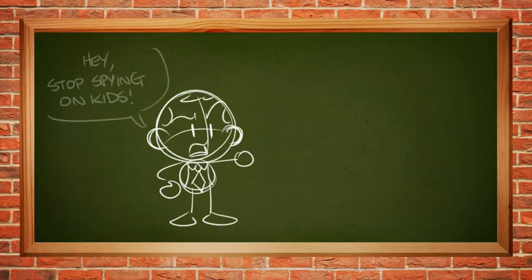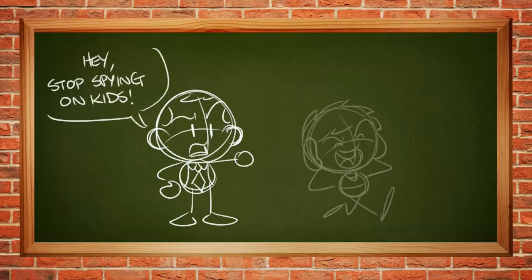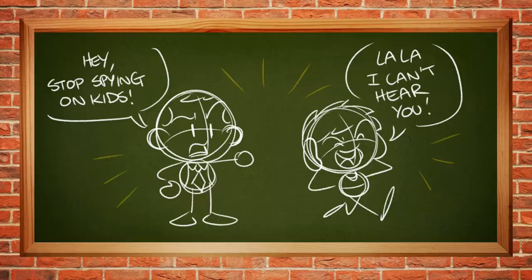So, in 1998, when Google was just barely getting off the ground, the Financial Trading Commission introduced the Children's Online Privacy Protection Act, or COPPA, which essentially said that it was illegal to collect data on minors.